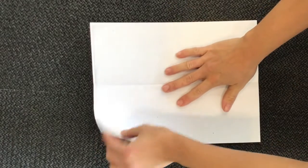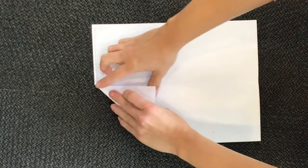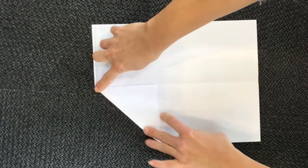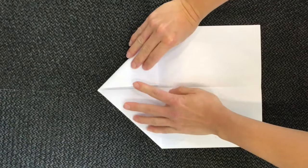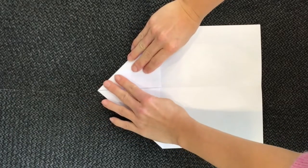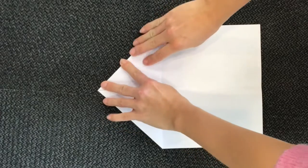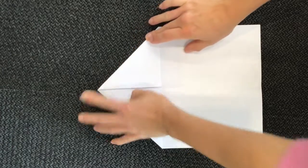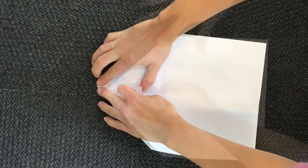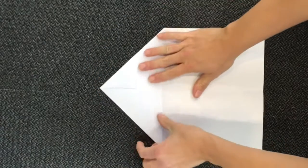Then you open it back up and you're gonna fold each side down into the center. And you want the pages to be as even as you can. Okay and then you're gonna do it again.